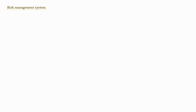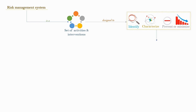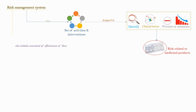Risk management system is a set of activities and interventions designed to identify, characterize, prevent or minimize the risk related to medicinal products. It also includes the assessment of effectiveness of these interventions.